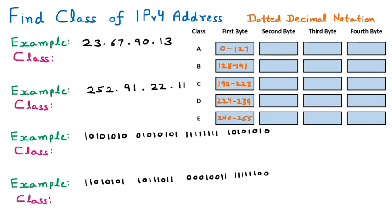Starting from the first IP, we have to focus only on the first byte — the second, third, and fourth bytes are not important for us. The first byte is 23. Since 23 falls within the range of 0 to 127, our first IP belongs to Class A.